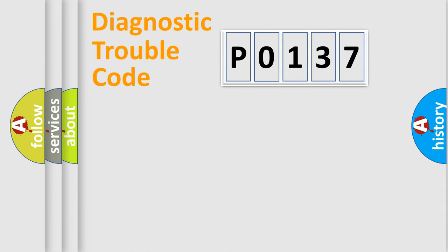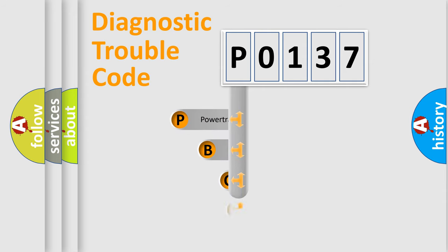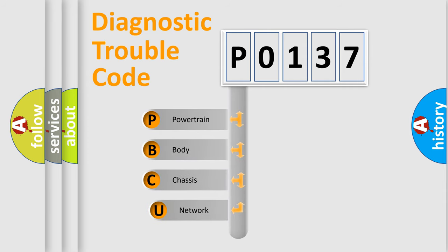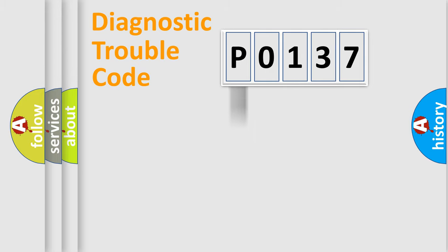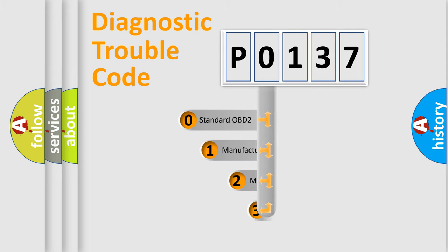First, let's look at the history of diagnostic fault code composition according to the OBD2 protocol, which is unified for all automakers since 2000. We divide the electric system of the automobile into four basic units: Powertrain, Body, Chassis, and Network. This distribution is defined in the first character of the code.